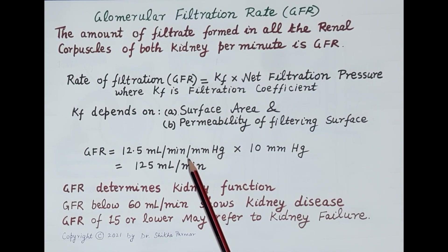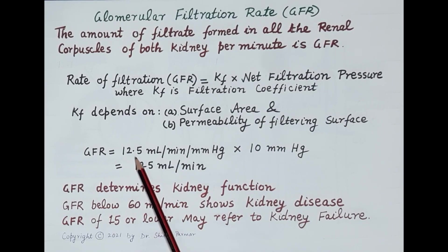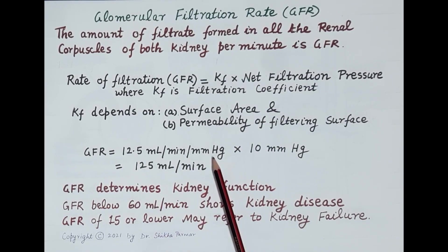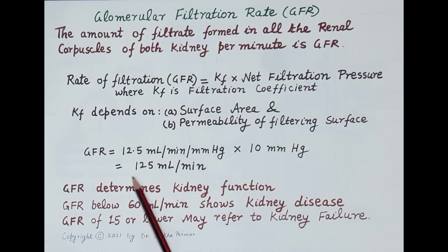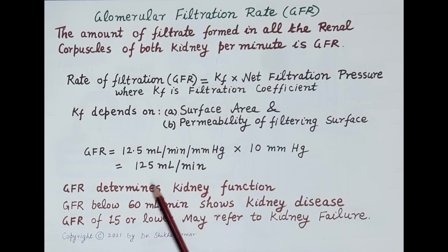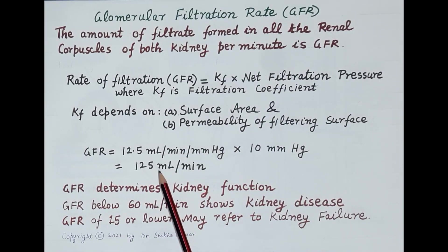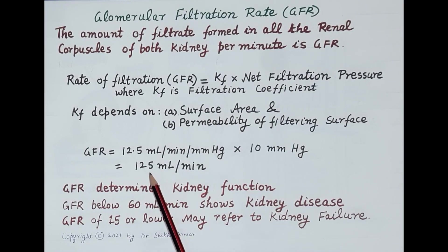The filtration coefficient equals 12.5 ml per minute per mmHg. With a net filtration pressure of 10 mmHg, the GFR comes to 125 ml per minute. This means 125 ml of filtrate is produced by both kidneys per minute, which equals 180 liters of filtrate produced in 24 hours.